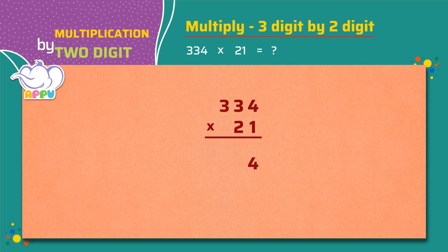Next, we multiply the number in the tens place by 1, which is 3 times 1 equals 3. Now we multiply the number in the hundreds place by 1, which is 3 times 1 equals 3.